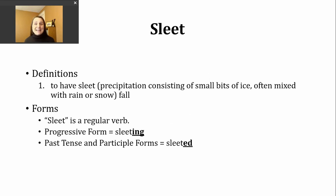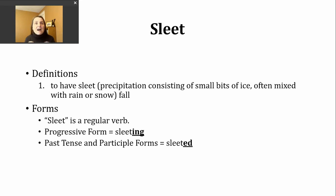There's really only one definition for this verb, and what it means is to have sleet fall. You might be wondering, what is sleet? This is a little bit of a preview — sleet can also be a noun. Sleet is a form of precipitation. You might think of this as liquid coming from the sky, but this type of precipitation is different than rain and different than snow. It has little bits of ice, and sometimes it could be mixed with rain or snow. So as you hear this verb used, people are referring to these little bits of ice falling from the sky.